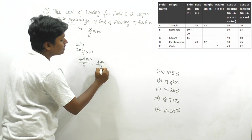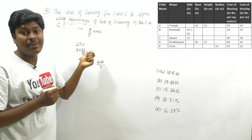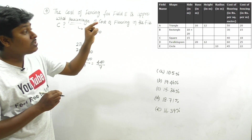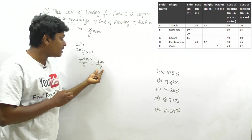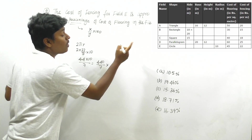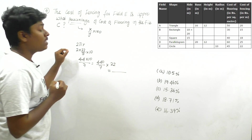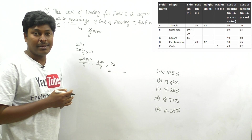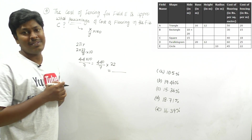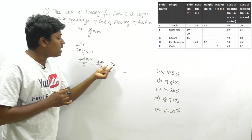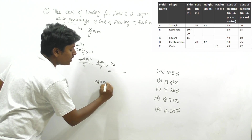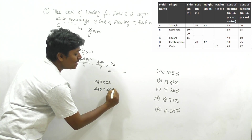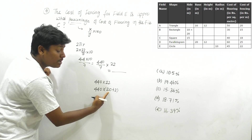Circumference = 2 × (22/7) × 10 = 440/7. The fencing cost for field E is 22 rupees per meter. So total fencing cost = (440/7) × 22 = (440 × 22) / 7. To multiply 440 × 22, write 22 as 20 + 2.